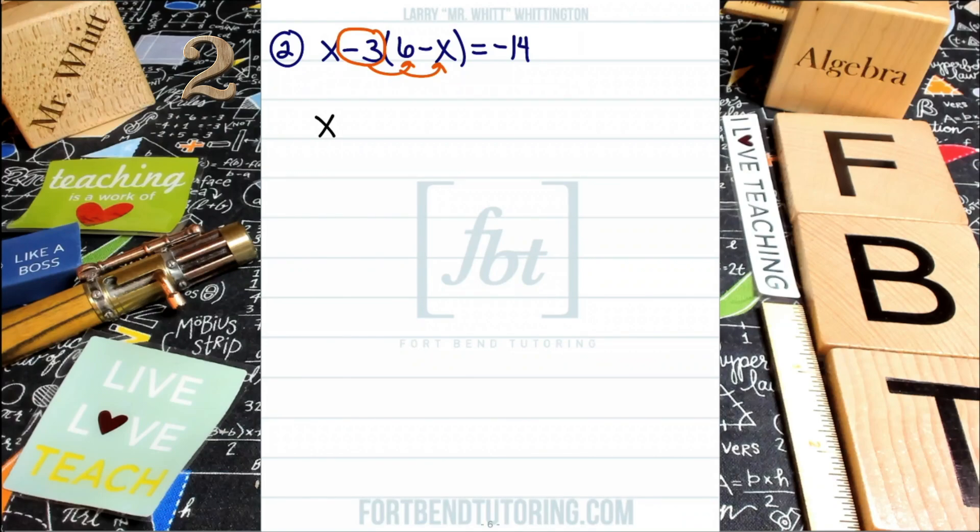That's right, the negative 3. You want to multiply that value inside of the parentheses. So keep in mind that the value on the outside of the parentheses is not just 3, it's negative 3. And that's why I'm circling it so that you'll remember that's what we're multiplying each and every term within the parentheses by. So that means that negative 3 times 6 gives you negative 18, negative 3 times negative x, that's a positive 3x. And you'll bring down the right side, that negative 14.